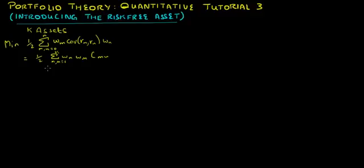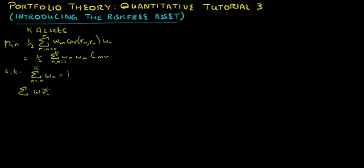We aim to minimize this portfolio's variance subject to two constraints: first, the sum of weights of all assets in the portfolio, including the risk-free asset, must equal 1; and second, the weighted average return based on the expected return of each security must equal the portfolio's expected return. Here, r-bar denotes the expected return of the portfolio and r-bar-n denotes the expected return of the nth security.